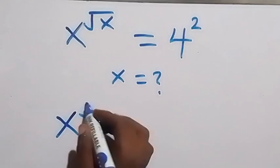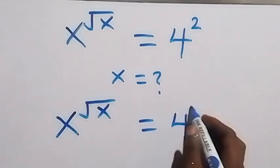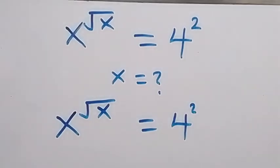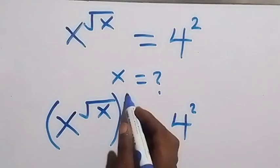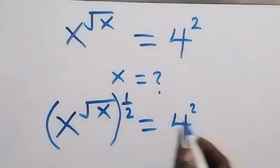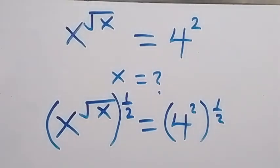From here, let's raise both sides to power half. Raise this side to power half, also raise this side to power half, and these powers we multiply each other. On this side, these powers multiply each other.